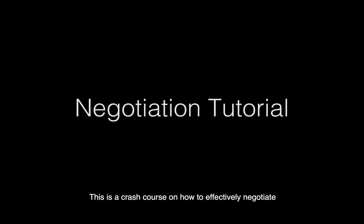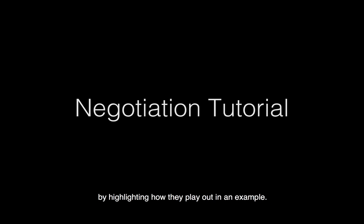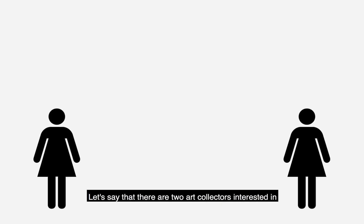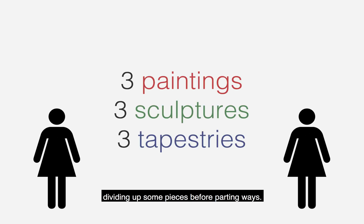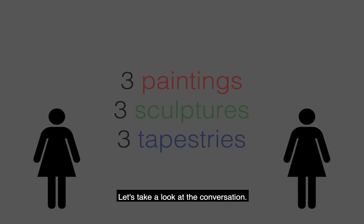This is a crash course on how to effectively negotiate within the Mechanical Turk environment. In this video, we'll go over some key ideas and helpful strategies by highlighting how they play out in an example. For the purposes of our example, let's say that there are two art collectors interested in dividing up some pieces before parting ways. Let's take a look at the conversation.